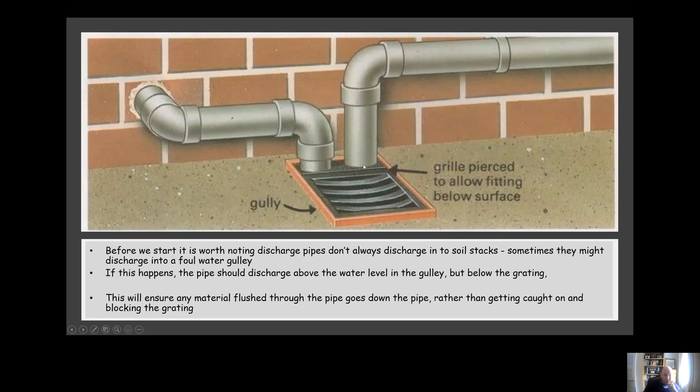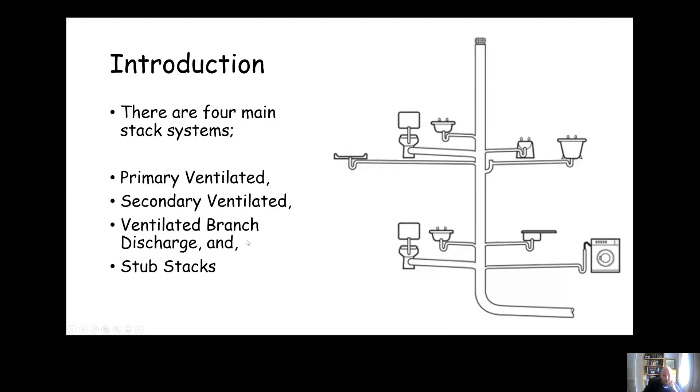But they must discharge above the water level in the gully. Essentially, the reason why it has to go through the grill is so that any hair or other materials that might travel through the pipe don't get caught on the gully grill and start to cause a blockage and cause things to spill out and make a mess.